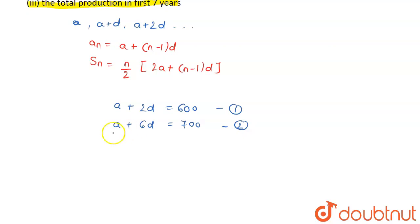Now let us solve it. Subtract the first equation from the second equation and you will get 4D = 100. Or you can say that the value of D is 25. Now, put the value of D in any of these equations to find out the value of A, that is the production in the first year.